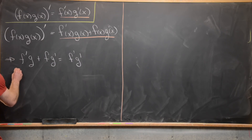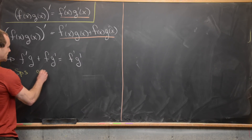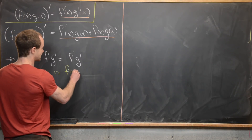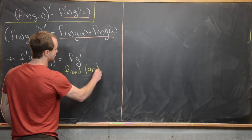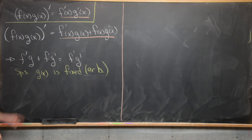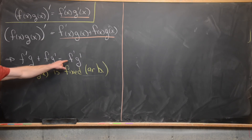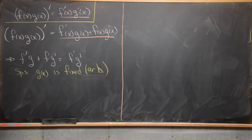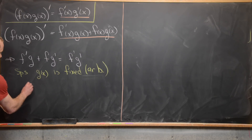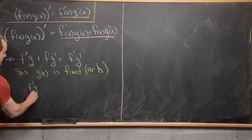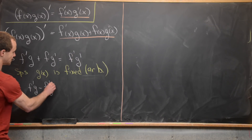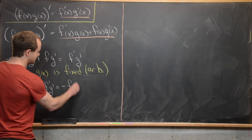So we'll proceed as follows: suppose that g(x) is fixed — arbitrarily fixed — and then view this as a differential equation for the function f, which depends on g. Let's see if we can get any leverage out of that. I want to move all the f' terms to one side and everything without an f' to the other side. That gives us f'g − f'g' = −fg'.